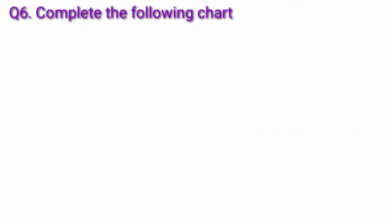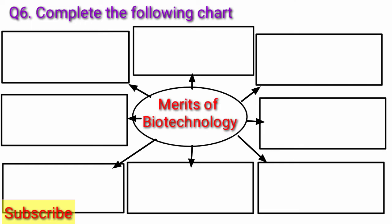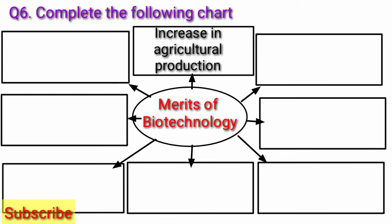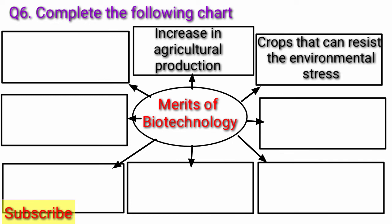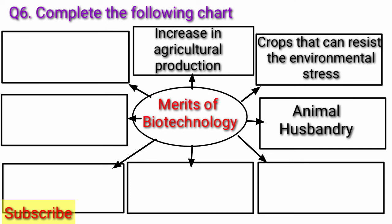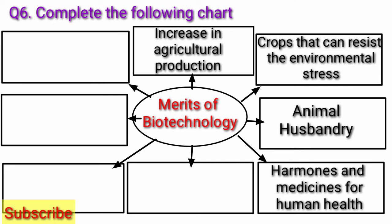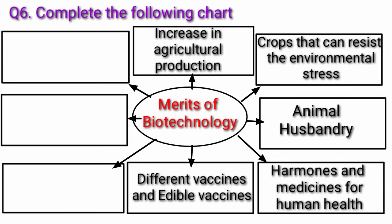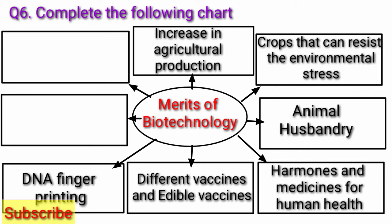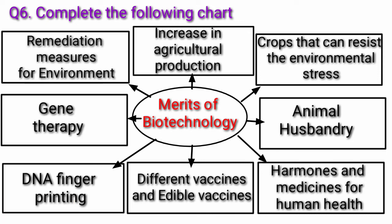Question 6: Complete the following chart — Merits of Biotechnology. Answer: Merits of Biotechnology include increase in agricultural production, crops that can resist environmental stress, animal husbandry, hormones and medicines for human health, different vaccines and edible vaccines, DNA fingerprinting, gene therapy, and remediation measures for the environment.